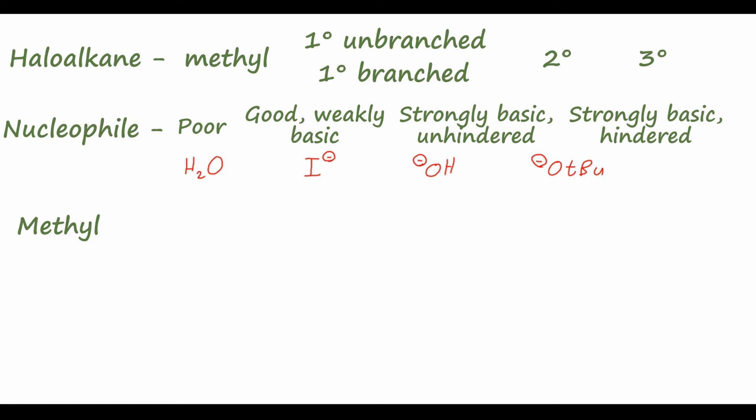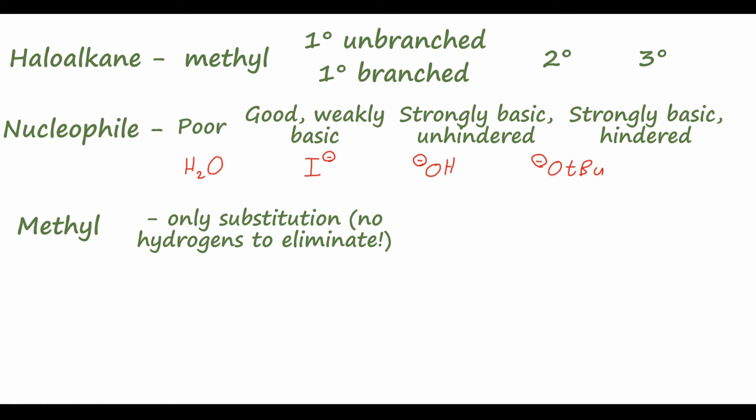Methyl haloalkanes will only undergo substitution reactions, not elimination, because there are no adjacent carbons to pull off a hydrogen and form a double bond — there's only one carbon. Furthermore, we can only have SN2 reactions, not SN1, because the methyl carbocation is very unstable and will never form. Only strong nucleophiles will perform SN2 reactions on a methyl haloalkane, because that carbon-halogen bond is quite strong at a methyl center.